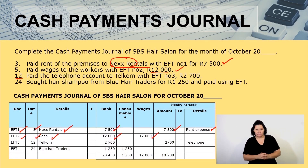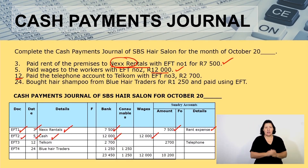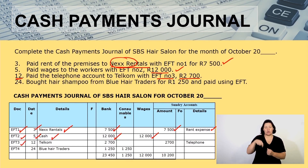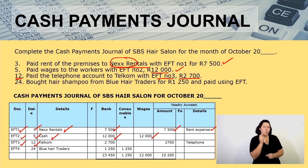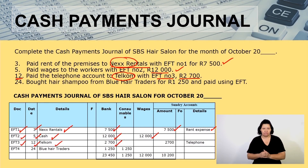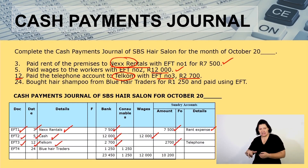Moving to the 12th: paid the telephone account to Telecom with EFT number three, 2,700. The date is the 12th, we paid Telecom, 2,700. It is not consumables, neither is it wages, so it comes to the last column — sundry accounts — as telephone.